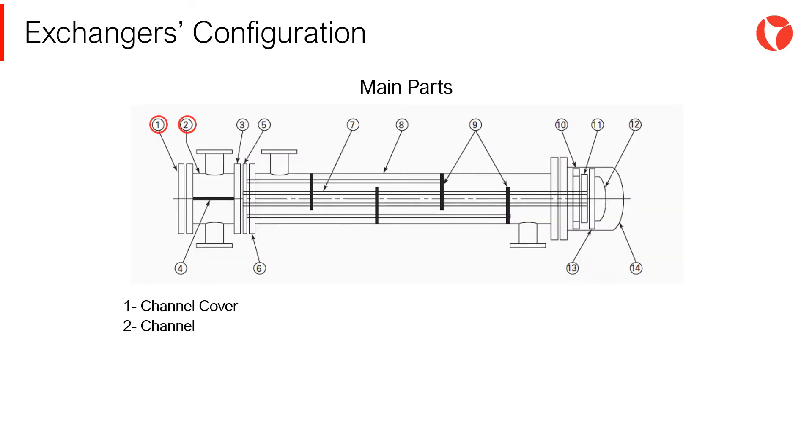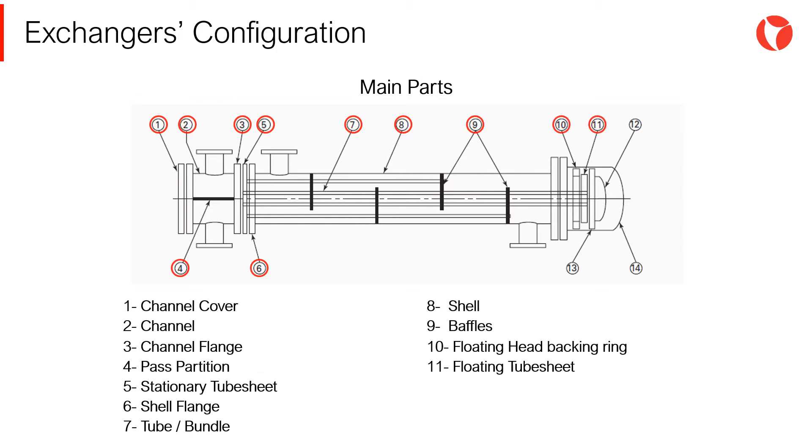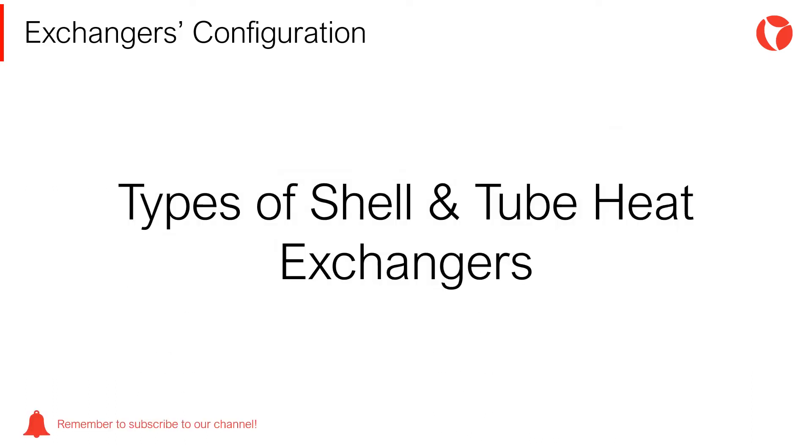Depending on the many different configurations available, shell and tube heat exchangers are formed by different elements. The picture shows the main part of a floating tube sheet type shell and tube heat exchanger, widely used in petrochemical refineries. Different design conditions require different configurations, therefore, different types of shell and tube heat exchangers.